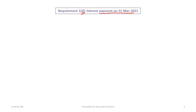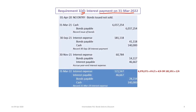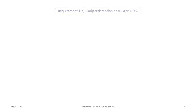The next entry records the interest payment on March 31st, 2022. We credit cash for $140,000. We then debit the interest payable balance of $46,667 to clear it. The remaining interest expense for the 4/6 months is $6,078,372 times 3% times 4/6 = $121,567. The bond payable adjustment to balance the entry is $28,234.